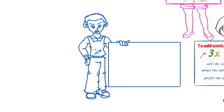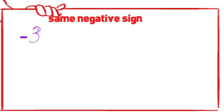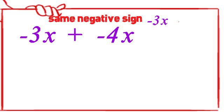For our second example, we are looking at negative numbers. Observe that we have negative 3x plus negative 4x. We could have written this as negative 3x minus 4x. We are writing it this way so you can understand it better.